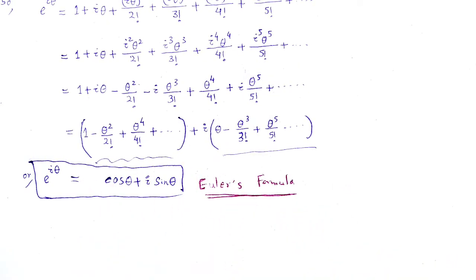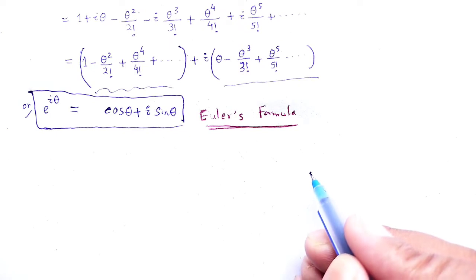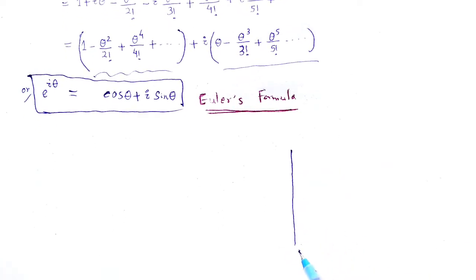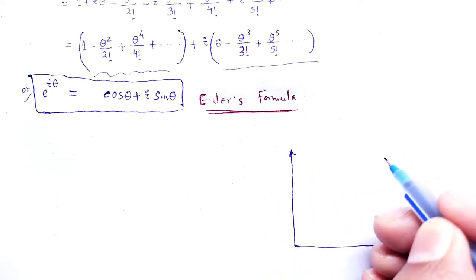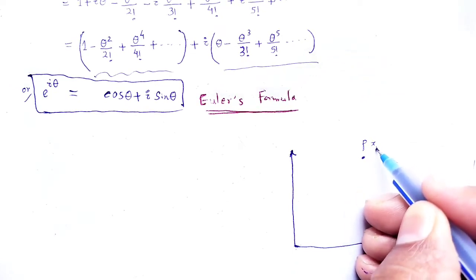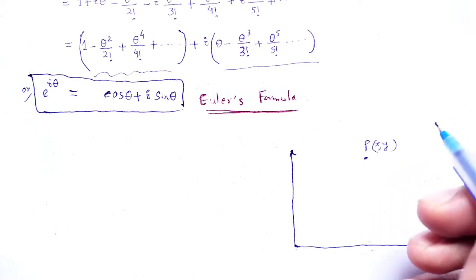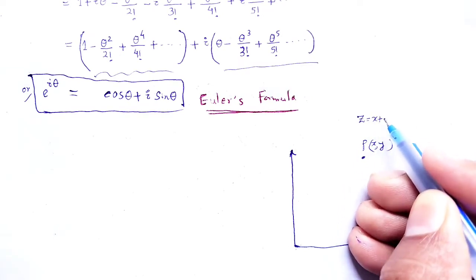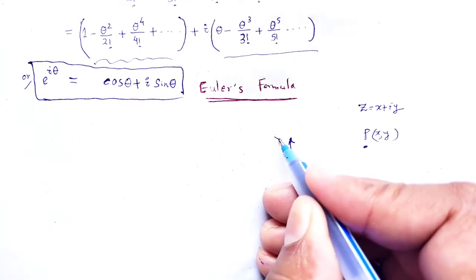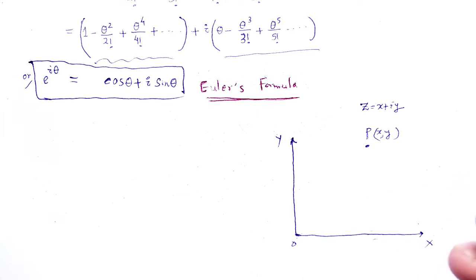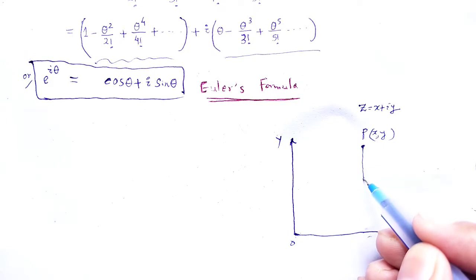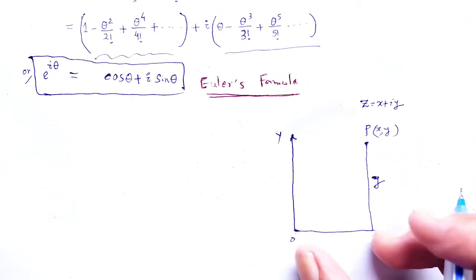Now we use Euler's formula to find the polar form of a complex number. We refer a point P having coordinates (x, y), representing the complex number z equals x plus i y, where the real axis and the imaginary axis are shown. The length along x is x, and the length along y is y, with angle theta and r being the distance from the origin.